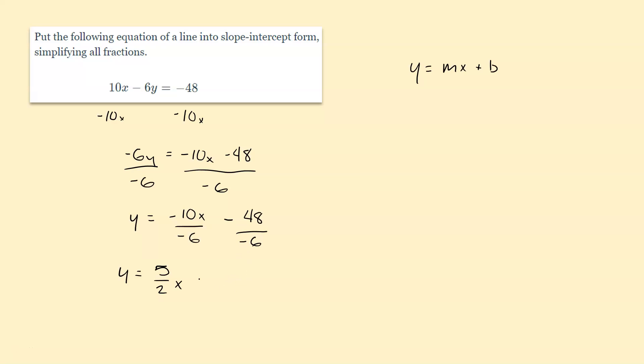So first off negative divided by negative becomes a positive. And second off we can reduce the numerator and the denominator by a factor of 6. Actually this divides perfectly. Negative 48 divided by negative 6 should give us a positive 8.